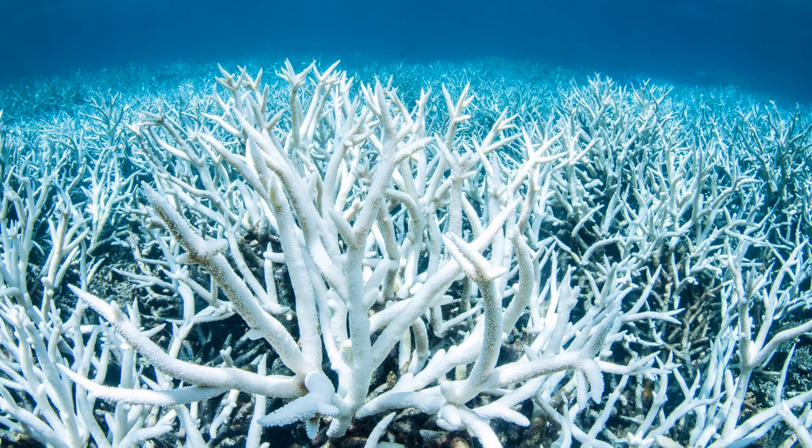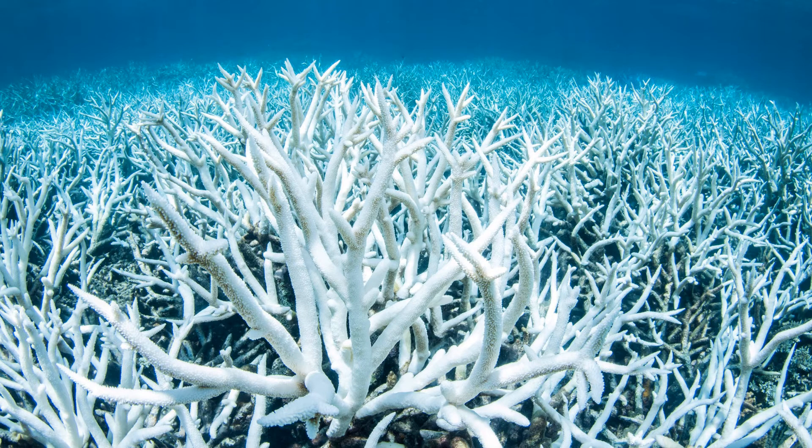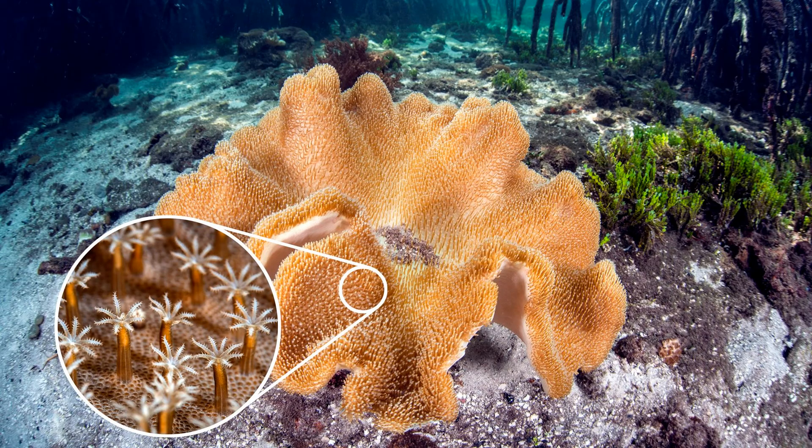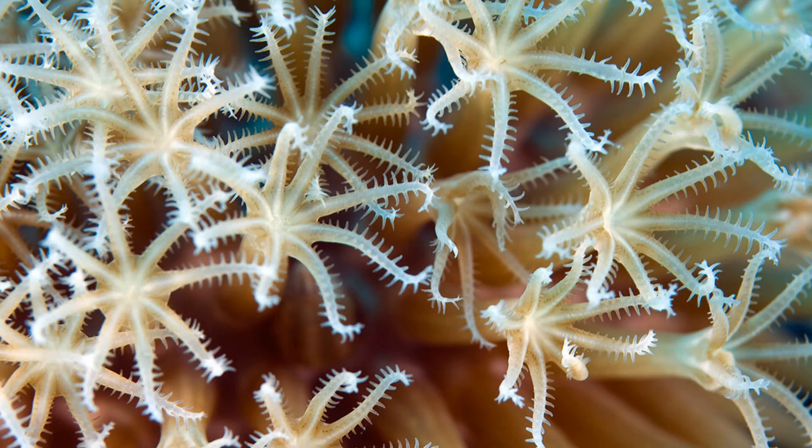Coral are colonial animals that live in groups or colonies. Each individual animal is microscopic and has a simple body plan. This body plan is based around tentacles surrounding a central cavity with a mouth and digestive system. Each individual animal lives in a box, extending these tentacles out of the box and into the water in order to feed.